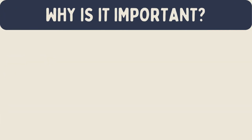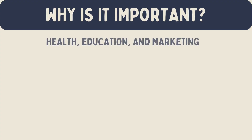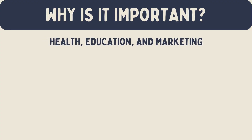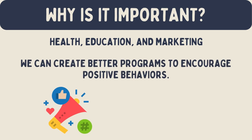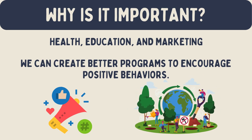The Theory of Planned Behavior helps us understand why people do what they do. It's used in many fields like health, education, and marketing. By understanding these factors, we can create better programs to encourage positive behaviors. For example, health campaigns can focus on changing attitudes, creating supportive social environments, and increasing people's control over their actions.